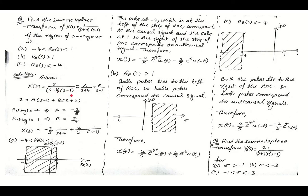First we find the partial fractions. X(s) = 2/((s+4)(s-1)) = A/(s+4) + B/(s-1). Substituting s = -4 gives A = -2/5, and substituting s = 1 gives B = 2/5. So X(s) = (-2/5)·(1/(s+4)) + (2/5)·(1/(s-1)).